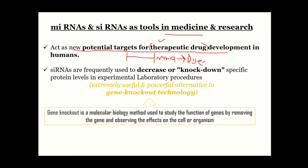Diseases induce certain changes in cell protein production. So assuming there is a disease-associated mRNA, we can create a drug that mimics a microRNA. It will bind to that specific sequence, arrest translation, and whatever disease that would have arisen can be stopped by that therapy.